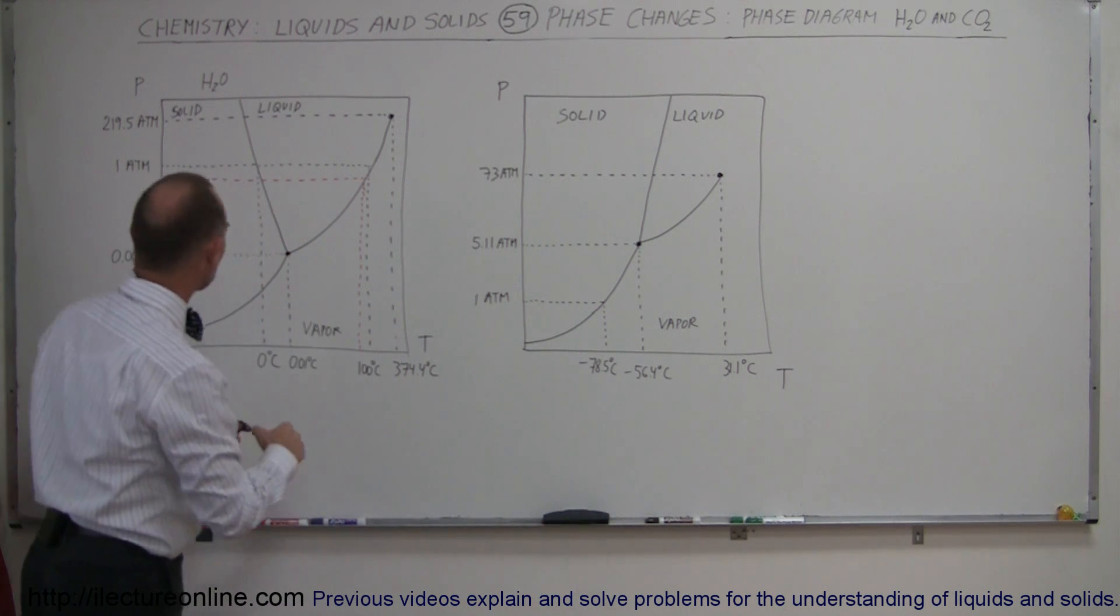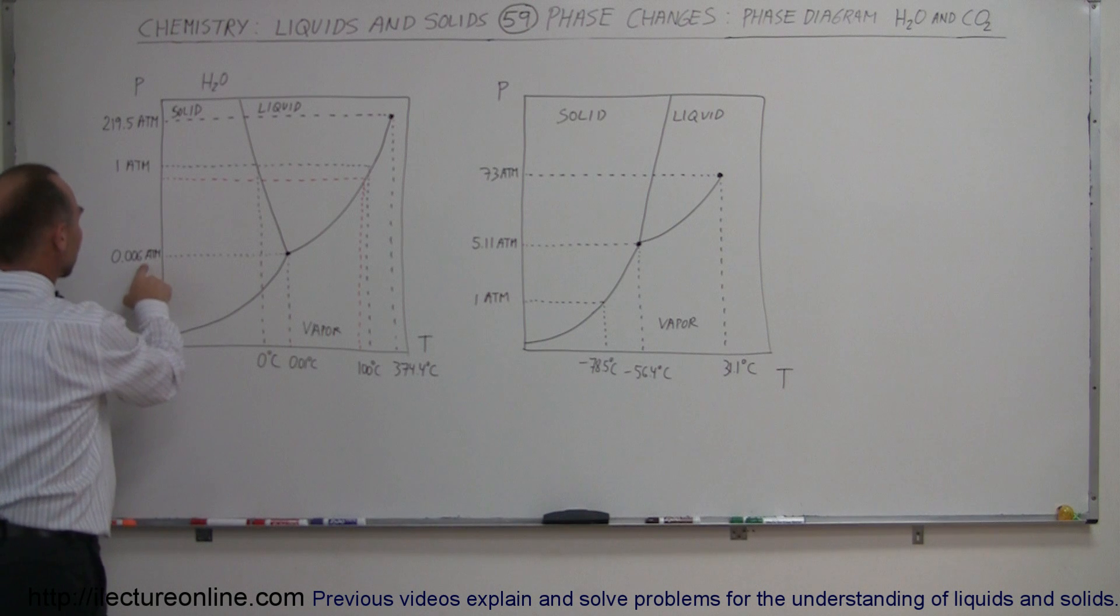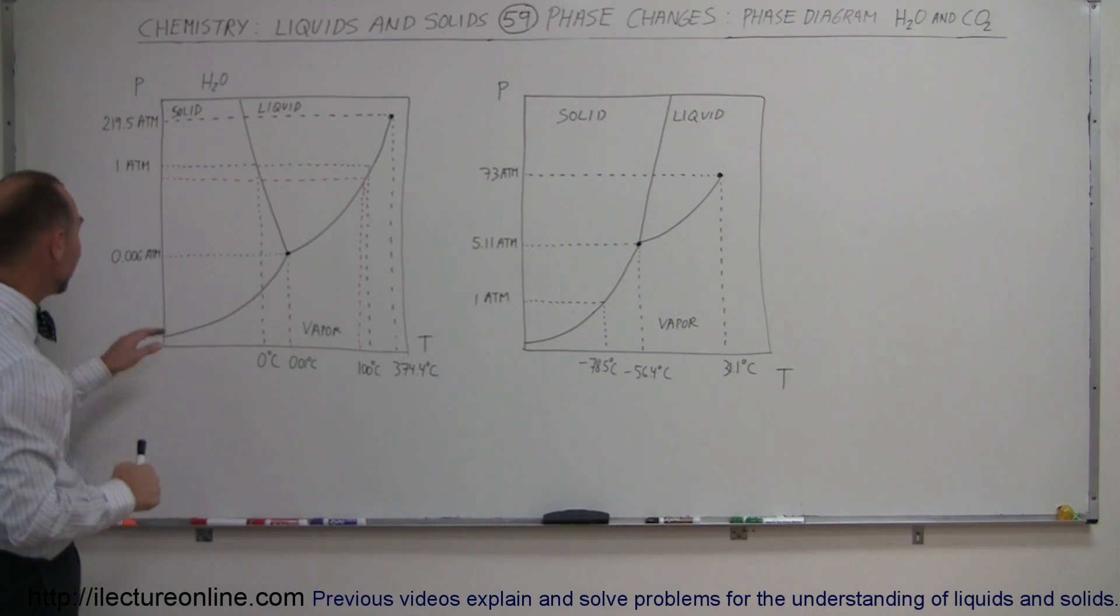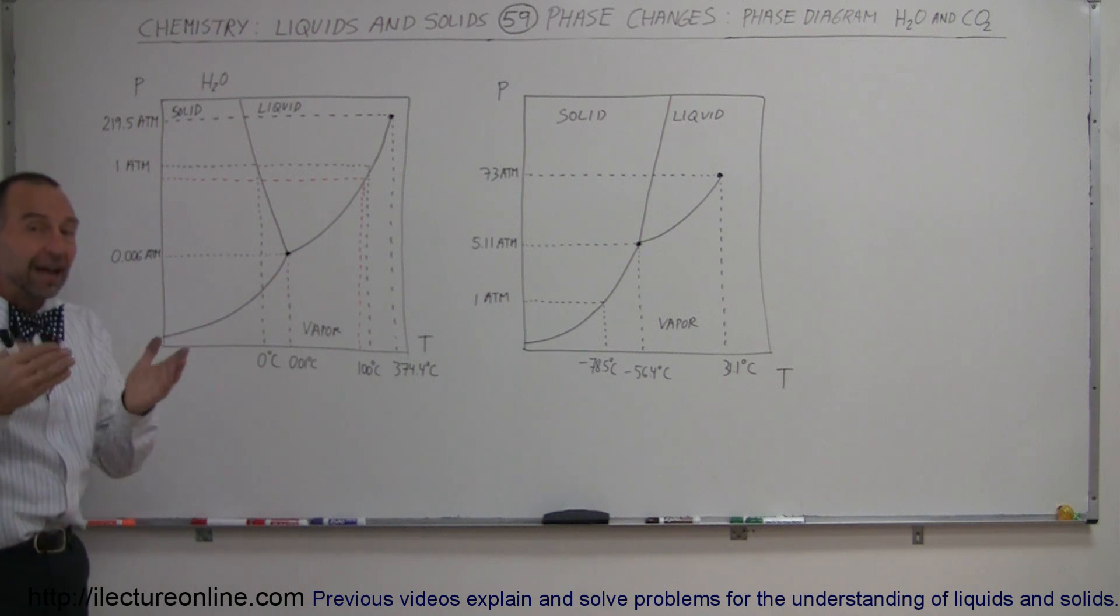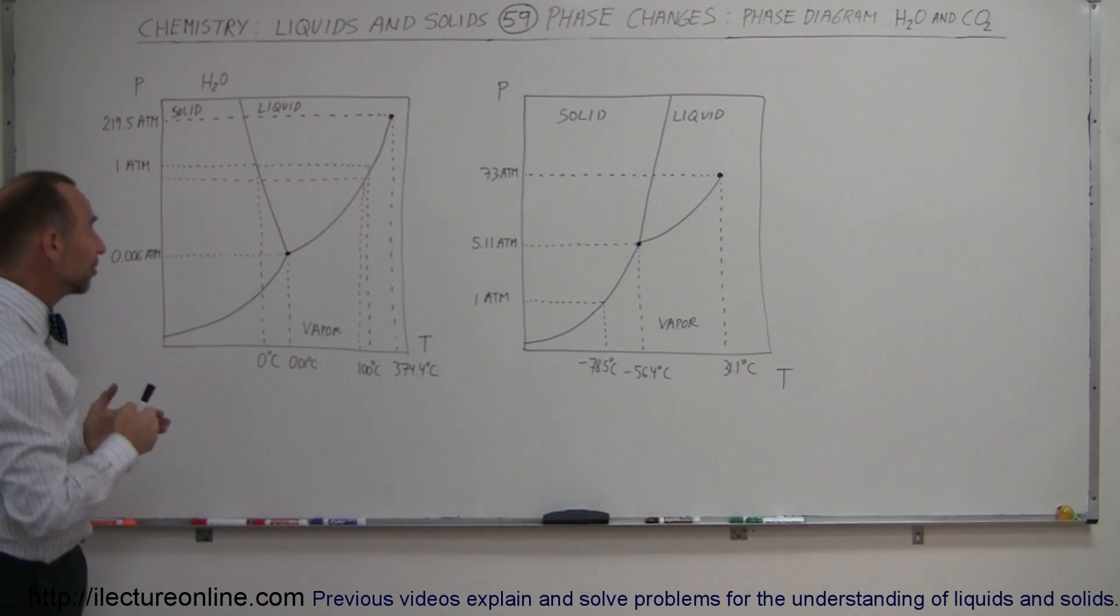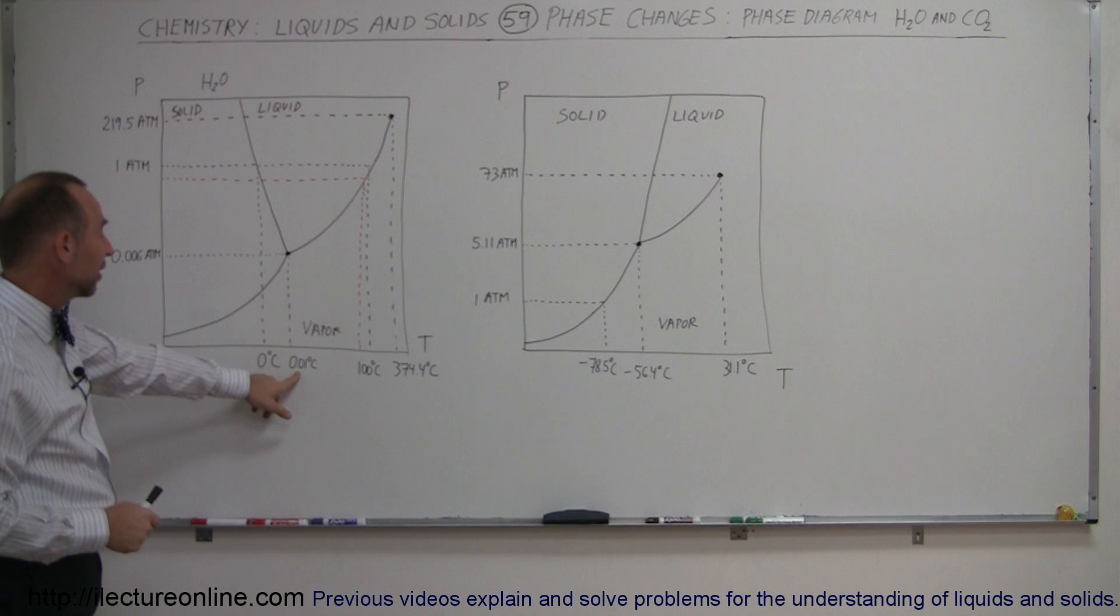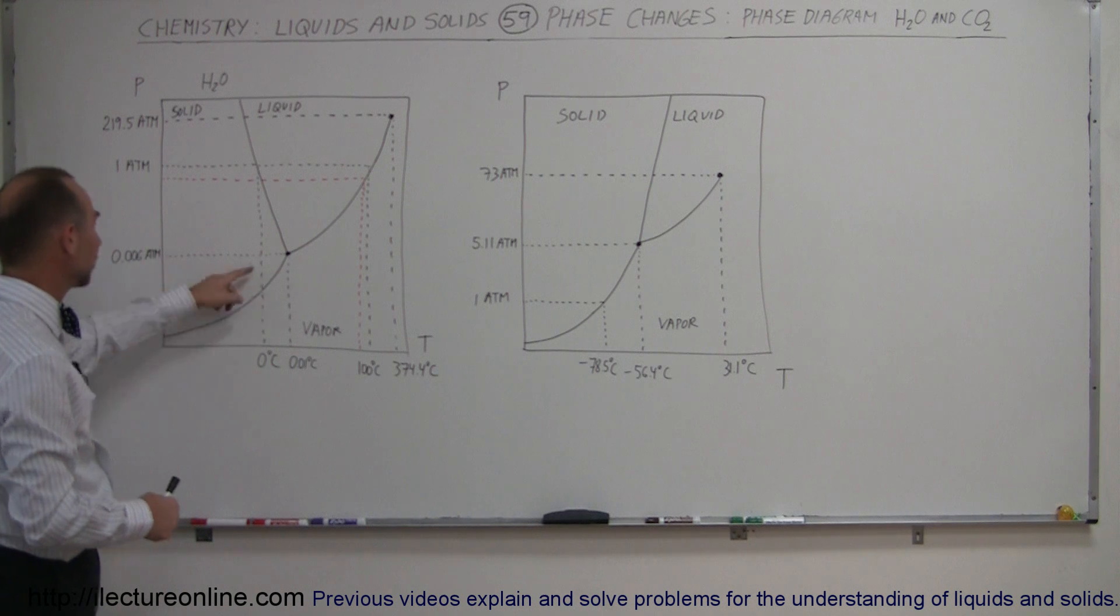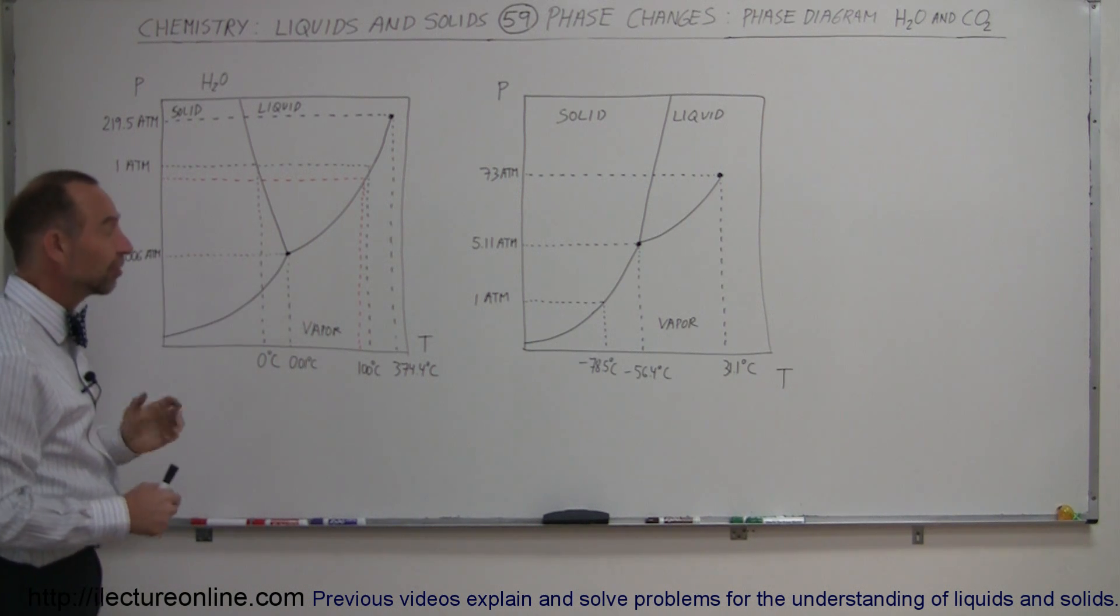But notice that the triple point for water occurs at a really low pressure. So the pressure has to be extremely low. Matter of fact, what's kind of unique here is that this is pretty well the atmospheric pressure on Mars. So on Mars, at a particular temperature, you could actually have all three phases of water exist. That would happen at a temperature of 0.01 degrees centigrade above the freezing point. So at this temperature and at this pressure, all three phases of water can exist.